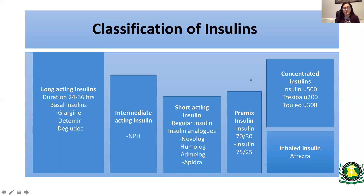Short-acting insulins include regular insulin and the insulin analogs. Insulin analogs are closer to natural insulins and provide a more physiological blood glucose lowering. These are mainly taken before meals, have a short half-life lasting only about four to five hours, and must be taken two or three times a day.